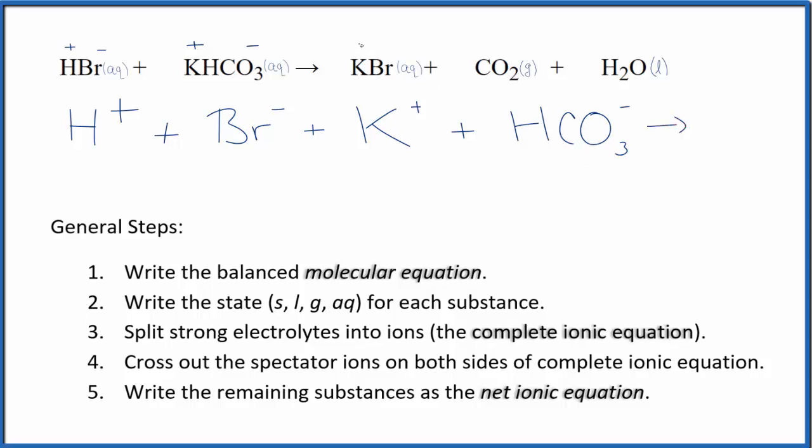For the products, KBr splits into K+ and Br-, just like in the reactants. We don't split gases or liquids apart in net ionic equations, so we keep CO2 and H2O together. This is the complete ionic equation.